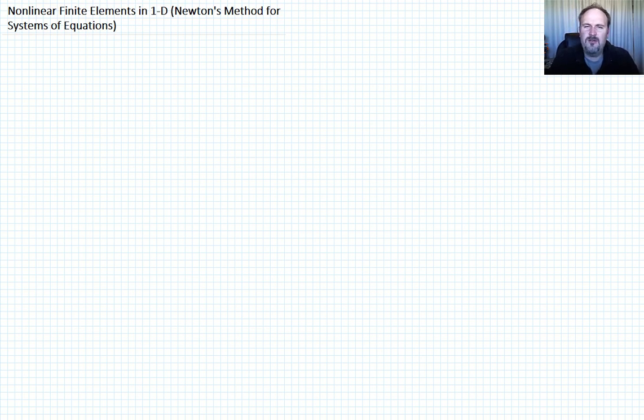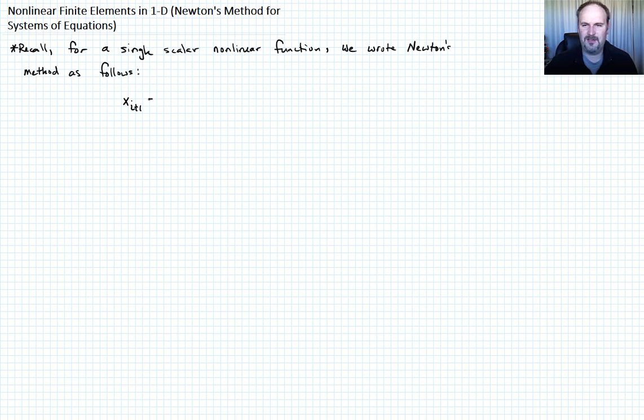Okay, in the previous lecture we talked about developing Newton's method for a 1D scalar equation and today we want to talk about how to do it for a system of equations. It's a similar approach, we might have to introduce some concepts that maybe you're not as familiar with, but what I'm going to do is just remind you what we had arrived at for the single scalar nonlinear function. So recall for a single scalar nonlinear function we wrote Newton's method as follows: an iterative scheme where X sub i plus 1 equals X sub i minus f of X of i over f prime of X sub i. Let's call that equation 1, and remember we're trying to set up the equation such that f of X is supposed to equal 0 when our solution is valid.